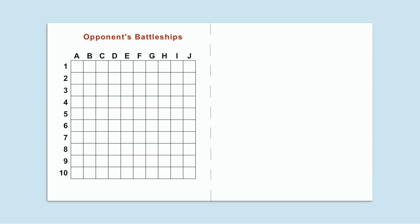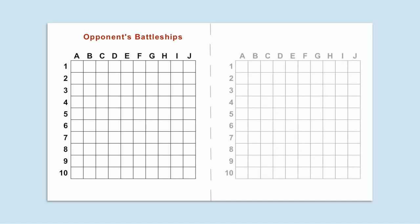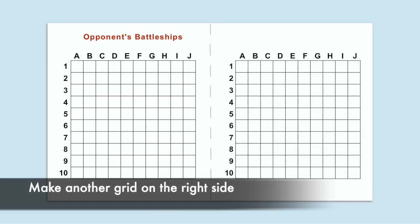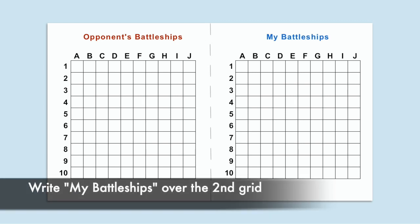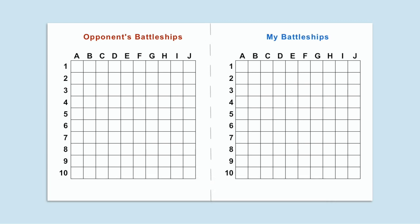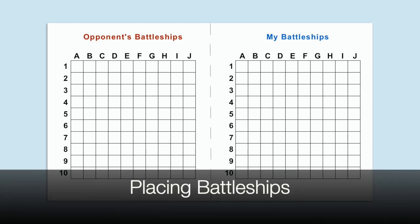After creating the first basic grid for the game, both players will create the same 10 by 10 grid on the other half of the paper. Above the second grid, the players will write My Battleships. After both players have created their two 10 by 10 grids, players will decide where to put their battleships on their grid.